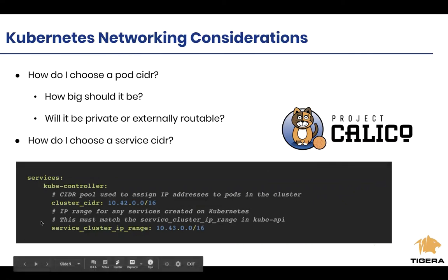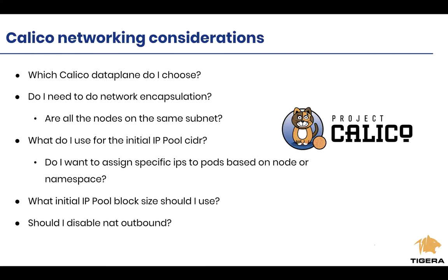Other natural considerations: what Calico data plane do I choose? The default is iptables. It is performant unless you have thousands of services and some need to scale even beyond that. It's the default — I'd guess more than 95% of our users or customers use it today. We've enhanced and optimized how we use the iptables data plane. The other option is eBPF.